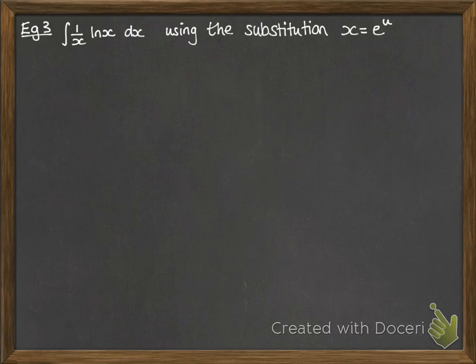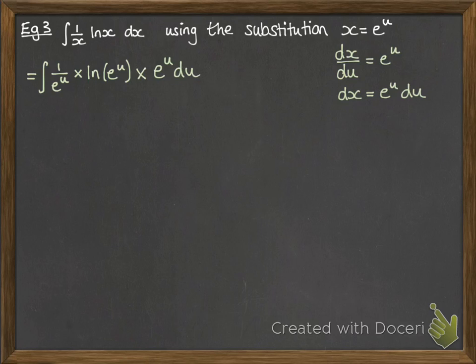This time we're told what substitution to use. Sometimes you'll be told in the question exactly what to substitute. Sometimes it's left to you to work out. Okay, so if we make that substitution, we end up with this. Now we need dx in terms of du. So rearranging, we get dx is equal to e to the u du.